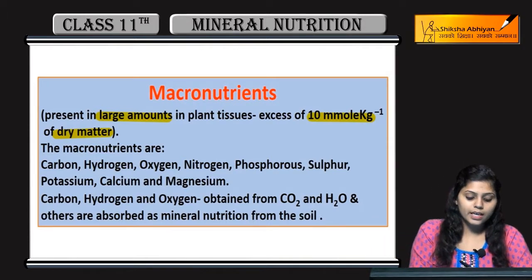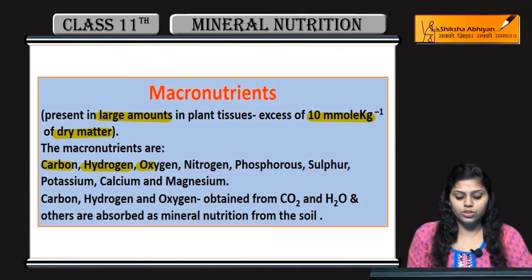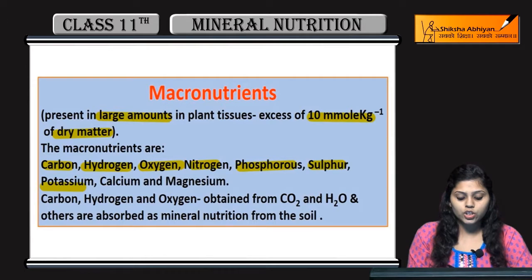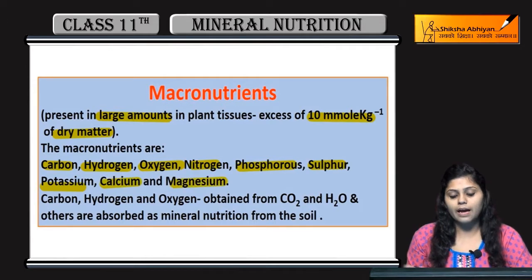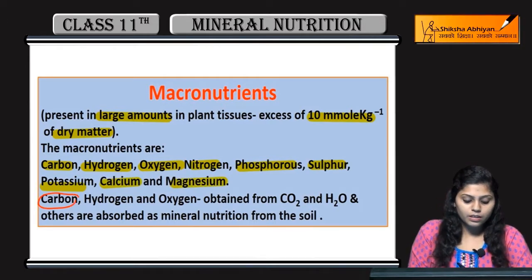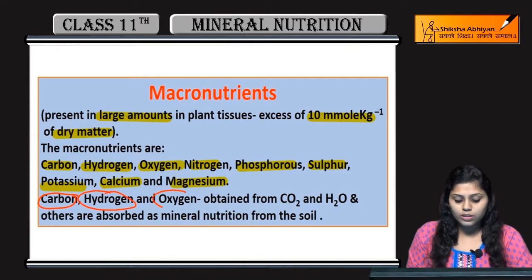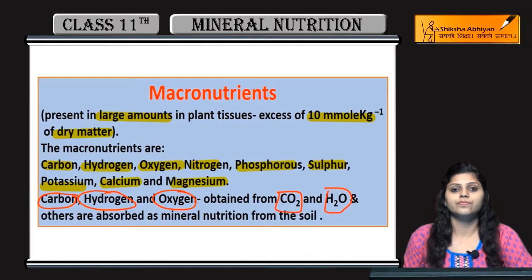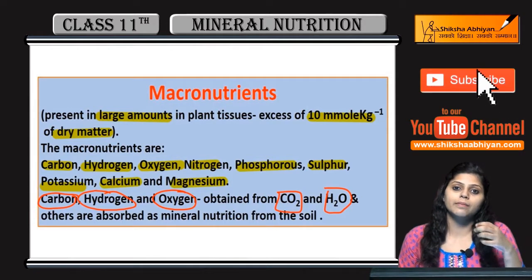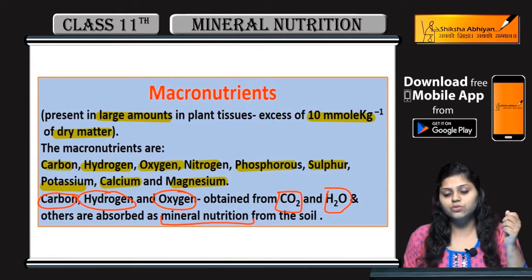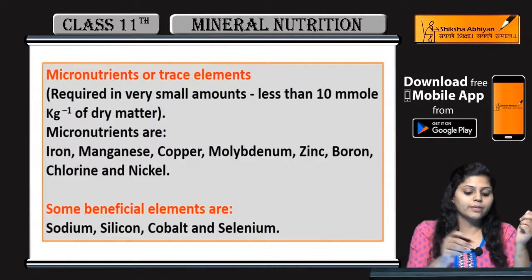The macronutrients are: carbon, hydrogen, oxygen, nitrogen, phosphorus, sulfur, potassium, calcium, and magnesium. Out of those, carbon, hydrogen, and oxygen are obtained from carbon dioxide and water. The remaining elements are absorbed by plants as mineral nutrition from the soil.